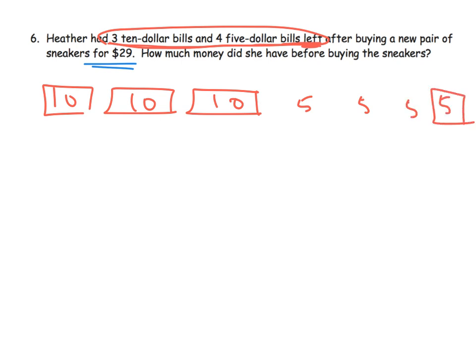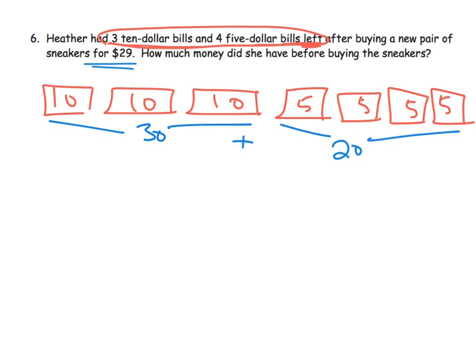So there's a $5 bill, there's a $5 bill, there's a $5 bill, and there's a $5 bill. So how much money does she have altogether? Well, this part is $30 and this part is $20. So she has $50. So she had $50 after buying a new pair of sneakers for $29.